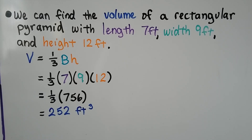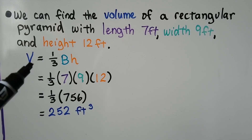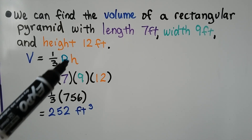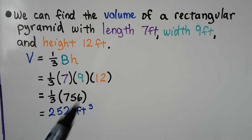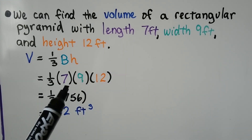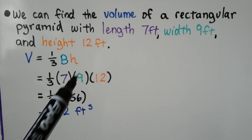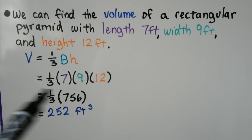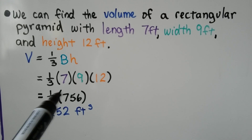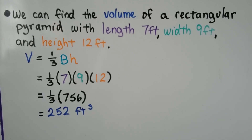We can find the volume of a rectangular pyramid with a length of seven feet, a width of nine feet, and a height of 12 feet. If it's a rectangular pyramid, the base is a rectangle. Our volume formula is V equals one-third B times h, so the base is the length times the width: seven times nine. We multiply by the height, giving us one-third times 756, or 756 divided by three, which equals 252 feet cubed.